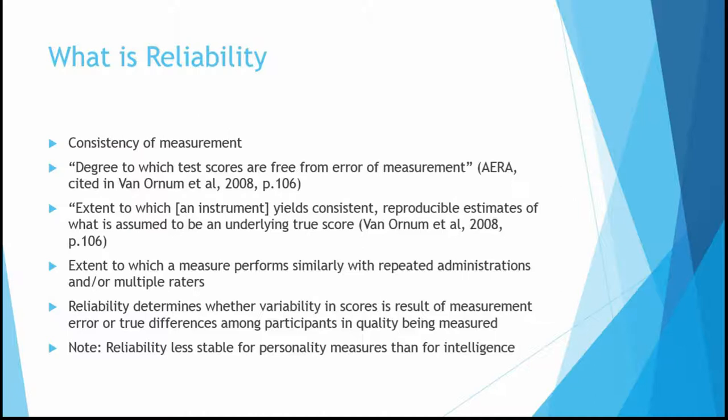One way of thinking about reliability is consistency of measurement — being able to consistently measure something using a psychological test or measure. Another way of thinking about it, from the textbook, is the degree to which test scores are free from error of measurement. In general, error is when something isn't right, and we want our scores to be reliable, meaning we don't want them to have a lot of errors.